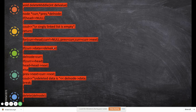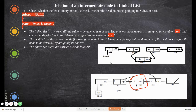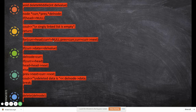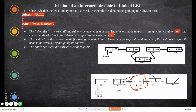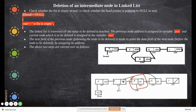In the for loop, current is initialized to head, so initially current and previous both point to the first node. The for loop continues while current is not equal to null. It ends either when current reaches null — meaning the value was not found — or when the node to delete is found.